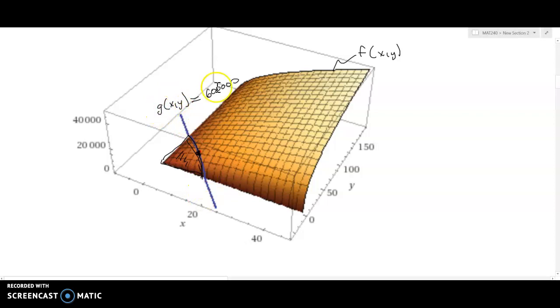g of xy was the function 40,000x plus 10,000y equals 600,000. But when we say 0 equals 0, we're no longer limited to this blue line. In fact, now we're opening ourselves up to the possibility of a maximum being any point on that surface.